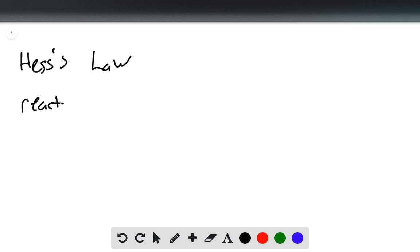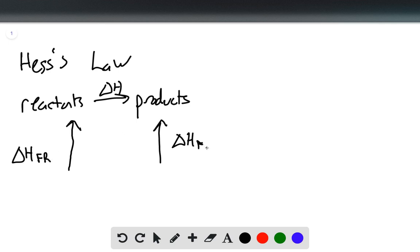This can be drawn out like this. Let's say we have a reaction of reactants to products. That's described by a delta H. Now we can describe the reactants with the delta H formation for the reactants, and we can describe the products also by a delta H of formation of the products.